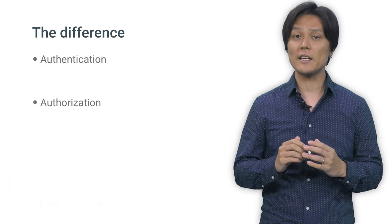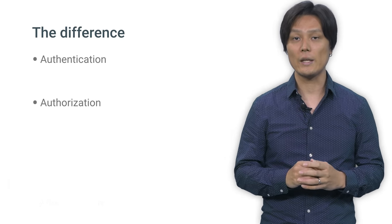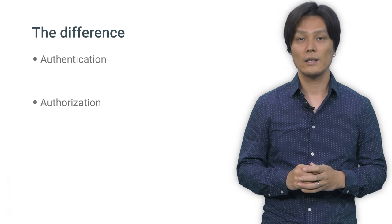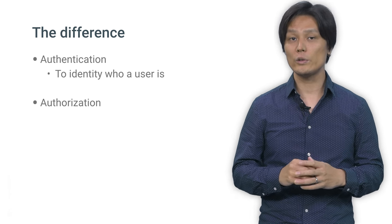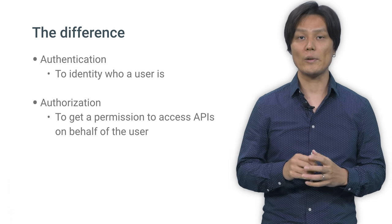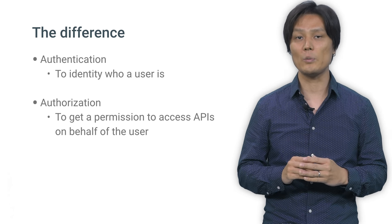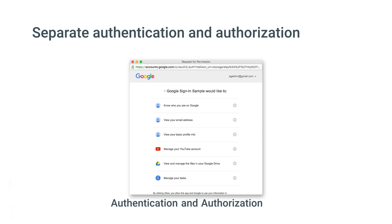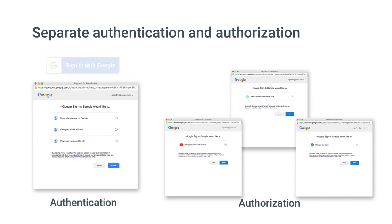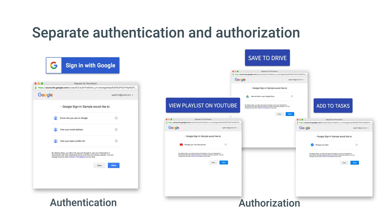Before moving forward, let's discuss the difference between authentication and authorization. Authentication means to identify who the user is, and authorization means getting permissions to access an API on behalf of the user. In many cases, these two steps occur together, where people sign in and grant permissions at the same time without knowing how these permissions will be used in the future. Our current recommendation is to let users authenticate first and defer asking permissions until you need to access an API.